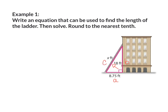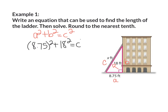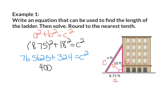Now I'm going to write my formula: a squared plus b squared equals c squared. Plugging in the numbers: 8.75 squared plus 18 squared equals c squared. 8.75 squared is 76.5625, and 18 squared is 324. Adding those gives me 400.5625 equals c squared.